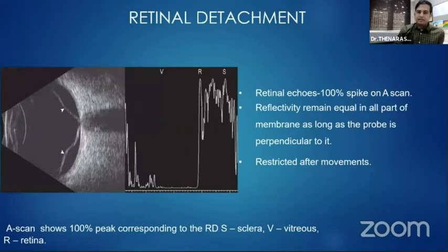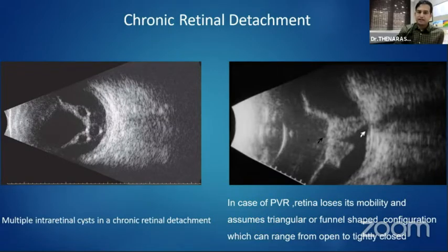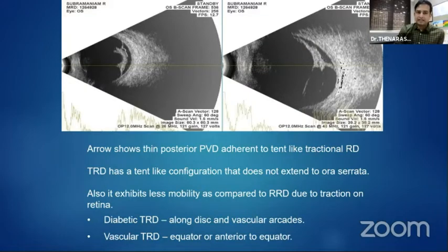There is also classic after-movement that persists in posterior vitreous detachment, which is absent in retinal detachment. In retinal detachment, a 100% spike is seen on the A-scan. In chronic retinal detachment, multiple intra-retinal cysts are visible, and depending upon PVR formation it could be open funnel or closed funnel configuration. In diabetic tractional retinal detachment a tent-leg configuration is seen, mostly in the posterior pole, and a tabletop configuration may also be seen. Vascular TRDs are restricted to the equator and beyond.